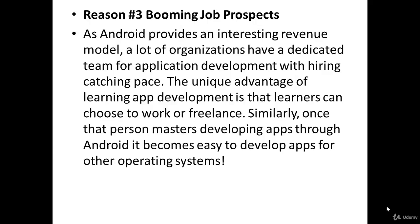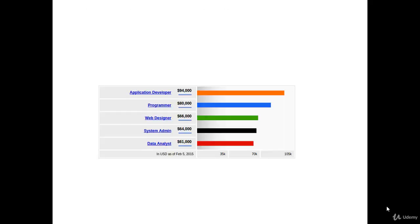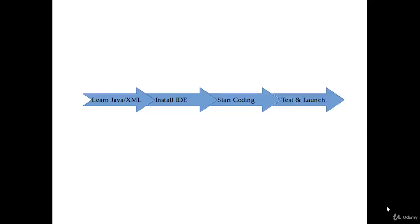Once a person masters developing apps through Android, it becomes easy to develop apps for any other operating system. In terms of pay, application developers — that is, Java developers or Swift developers — top the stats. There is a huge career option after completing this course. We'll see how to learn Java, how to work with XML, and we'll install our IDE, Android Studio, then start coding, test, and launch our app.